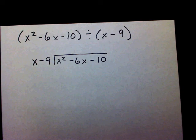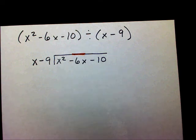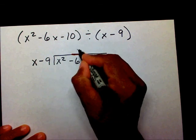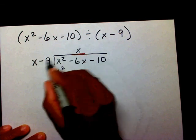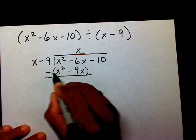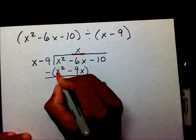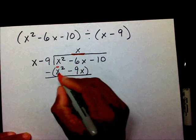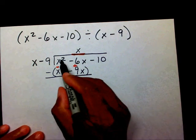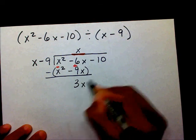Since this is a binomial, I'm going to start in the second position of my trinomial — that is where my first response is going to be. I need to know what number times x will give me x squared. Well, x times x is x squared, and x times negative 9 is negative 9x. I'm going to subtract this binomial. When I subtract, I need to distribute my negative throughout the parentheses, so x squared will become negative x squared, and this minus sign will become a plus sign. X squared minus x squared — they cancel each other out. Negative 6x plus 9x is 3x. And bring down my minus 10.